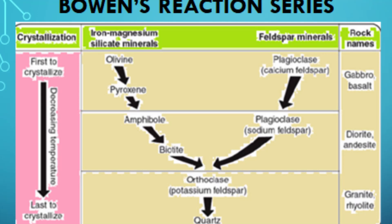The discontinuous series includes minerals that crystallize out of the magma at specific temperature intervals. The first mineral to crystallize is olivine, which has a high melting point and forms at temperatures of around 1200 degrees Celsius. Next, pyroxene forms at slightly lower temperatures, followed by amphibole and biotite mica. These minerals are said to be discontinuous because they crystallize out of the magma at discrete temperature intervals, rather than gradually.